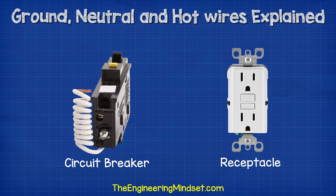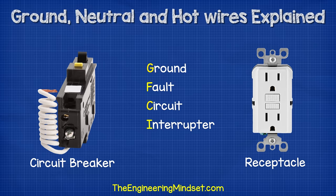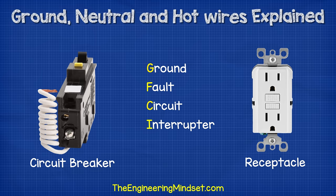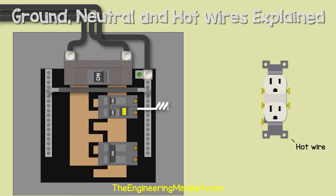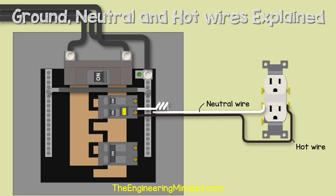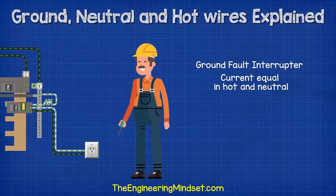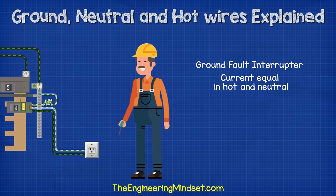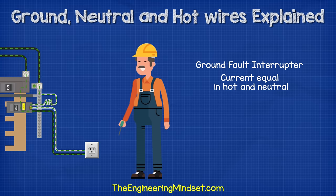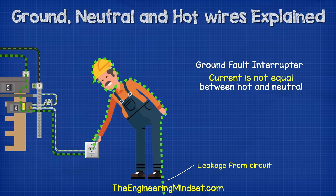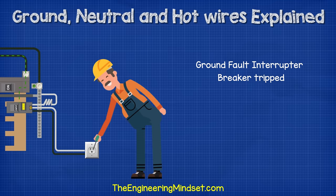Luckily we have the GFCI receptacle or the GFCI breaker — GFCI stands for ground fault circuit interrupter. We're going to look at the circuit breaker version, though they essentially work the same. This GFCI breaker is connected to both the hot and the neutral of the circuit so it can monitor the wires and ensure that the current running in the hot wire equals the current running in the neutral wire. If the current is not equal in these two wires, then it is clearly flowing back to the source via another route — we then have a ground fault. The breaker will realize this and very quickly and automatically flip to cut the power and kill the circuit.